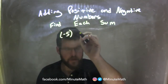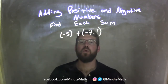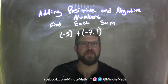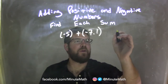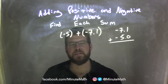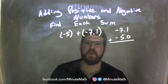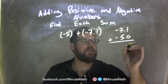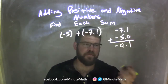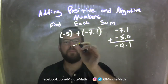Negative 5 plus a negative 7.1. They're both negative, so they'll give a larger negative number. I rewrite it as negative 7.1 plus a negative 5.0 to align the decimals. Our final answer is going to be a larger negative. 0.1 plus 0 is 0.1, and negative 7 plus negative 5 is negative 12. So our final answer is negative 12.1.